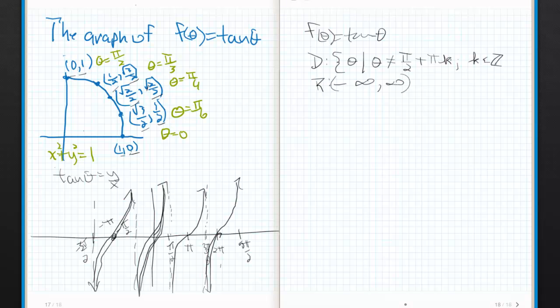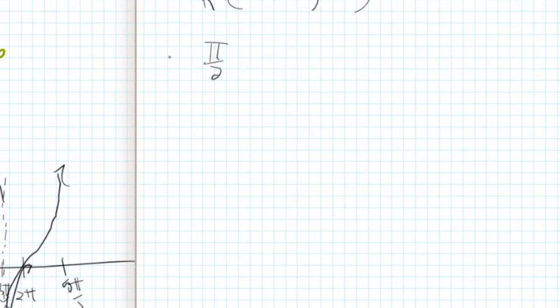So check it out. If k is 1, I know that pi halves plus pi, so for k equals 1, pi halves plus pi is 3 pi halves. And that right there is that value, try that again, that right there, sorry about that you guys, is that value.